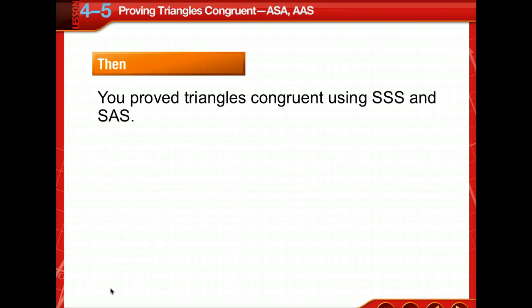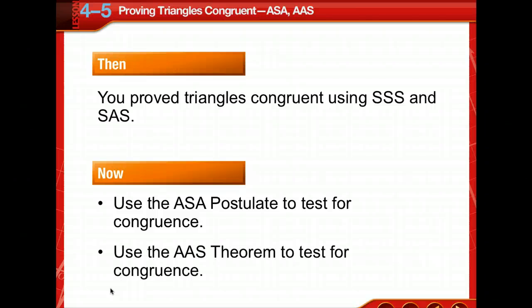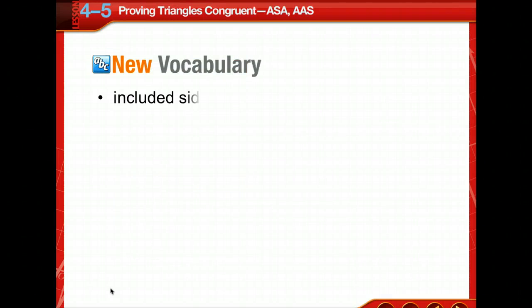Previously, you've proved triangles congruent by side-side-side and side-angle-side. Now we're going to use the angle-side-angle postulate to test for congruence, and we're going to use the angle-angle-side theorem to test for congruence. We've got one new vocabulary word: an included side.